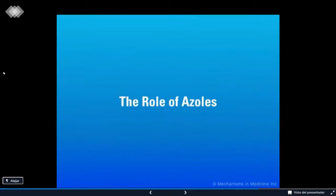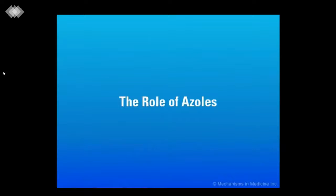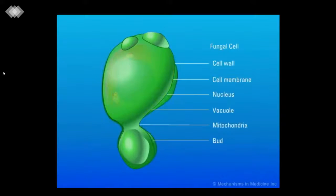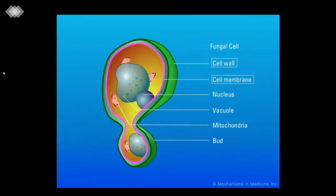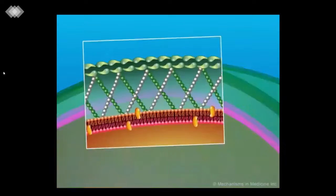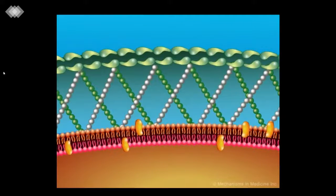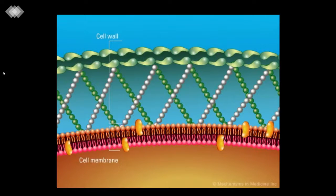Fungi are eukaryotic organisms which possess a unique cell wall and cell membrane that can serve as targets for antifungal agents. The azole family of drugs specifically targets the fungal cell membrane. The cell membrane of fungi is composed of a lipid bilayer with proteins embedded within it. A major component of the fungal cell membrane is the presence of sterols, which are virtually absent from all prokaryotes, including bacteria.